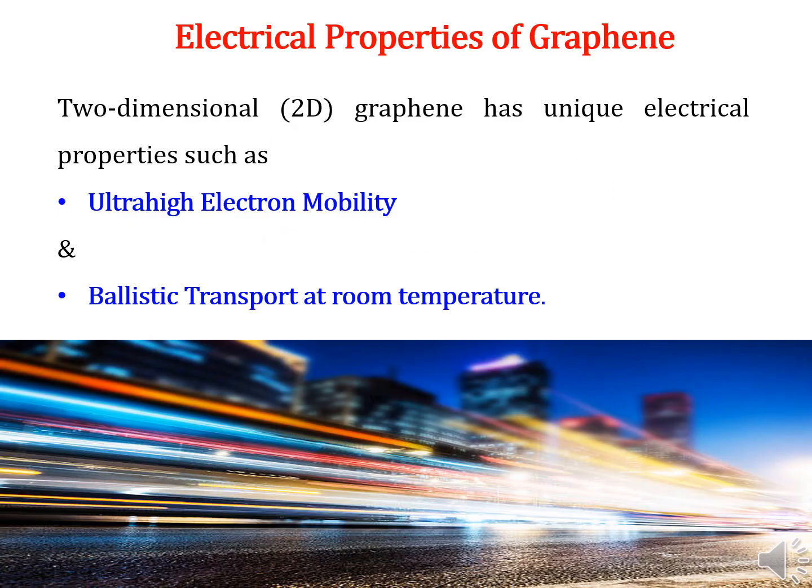Graphene also exhibits excellent electrical properties. Graphene has remarkable electrical properties thanks to its crystal and band structures. The unique structure of graphene, in which all atoms are surface atoms, makes its electronic band structure and hence electrical properties extremely sensitive to surface effects, surface curvatures, as well as environmental interactions. Two-dimensional graphene has unique electrical properties such as ultra-high electron mobility and ballistic transport at room temperature, making graphene different from many other materials.